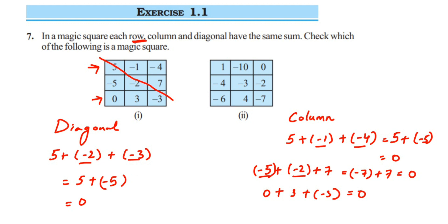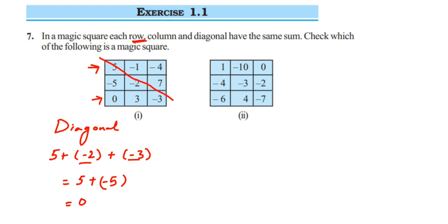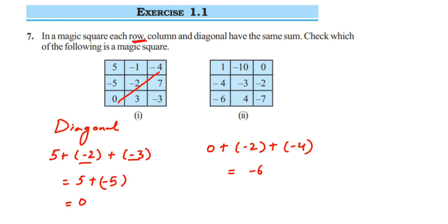The second diagonal is 0 + (−2) + (−4). Zero doesn't change the answer. −2 and −4 have the same sign, so 2 + 4 = 6, giving −6. We are not getting 0 here. Since the last diagonal gives −6 instead of 0, the first square is not a magic square.